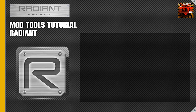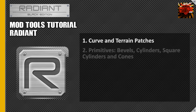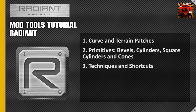Hey guys, this is Jaybird from UGXMods and we're going to be doing another tutorial today dealing with patches. The first thing we're going to go over is curve patches versus terrain patches and how we can implement those. The second thing is primitives which will include bevels, cylinders, square cylinders, and cones, and how you can use those to add detail to your map. The last thing I'll go over is some techniques I use while dealing with patches as well as some of the uses for them. Let's get started.